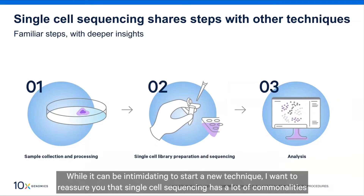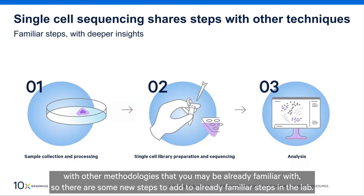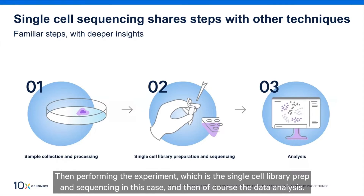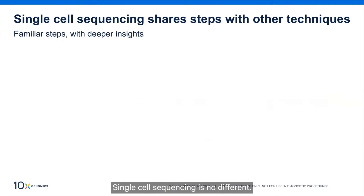While it can be intimidating to start a new technique, single-cell sequencing actually shares a lot of commonalities with other methodologies you may already be familiar with — there are some new steps added to already familiar lab steps. At the end of the day, all experiments come down to three key steps: sample collection and processing, performing the experiment (in this case, single-cell library prep and sequencing), and data analysis. Single-cell sequencing is really no different.